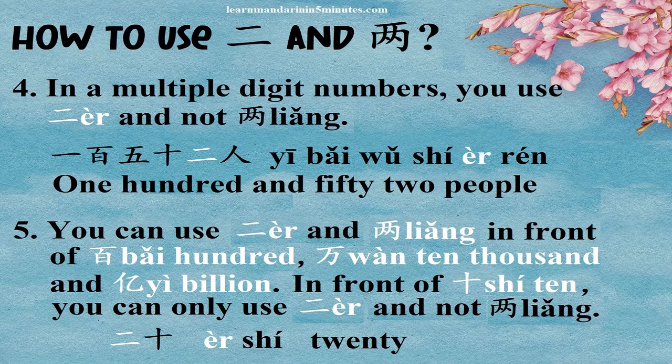You can use 二 and 两 in front of 百 (hundred), 万 (ten thousand), and 亿 (billion). However, in front of 十 (ten), you can only use 二 and not 两.